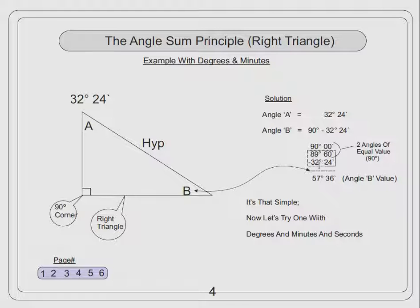Now we can do the subtraction, 32 degrees, 24 minutes. And the answer is 57 degrees, 36 minutes, for the value of angle B.